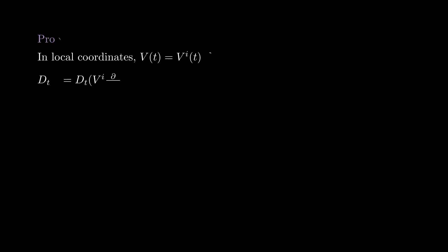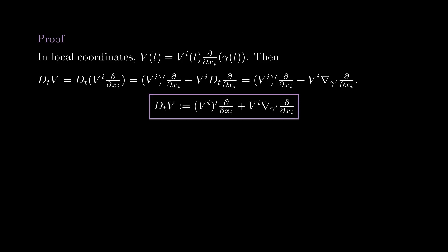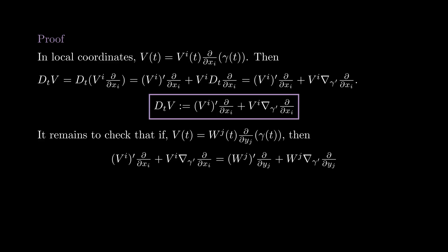To prove this, we work in local coordinates and write V in terms of the coordinate vector fields. By the Leibniz rule it must satisfy this identity, and by the compatibility with the connection it must satisfy this other identity. Notice that this last expression is already determined by the connection, so we can define the covariant derivative with this formula. I will ask you to check that this formula for the covariant derivative does not depend on the chart that we are using — meaning that if we use another chart with different coordinates, then an analogous formula gives the same covariant derivative.